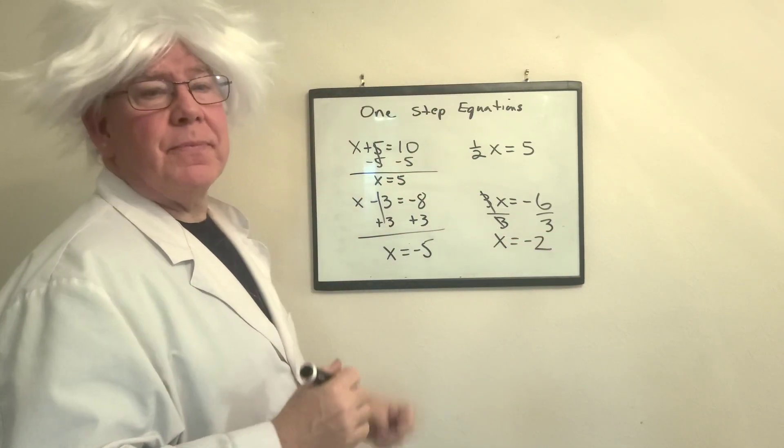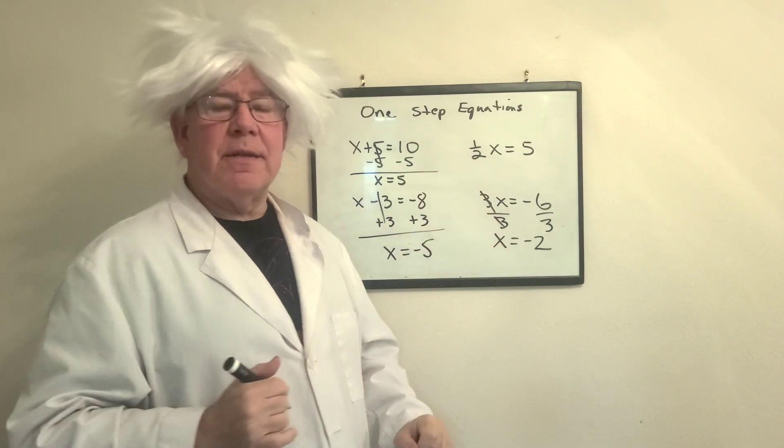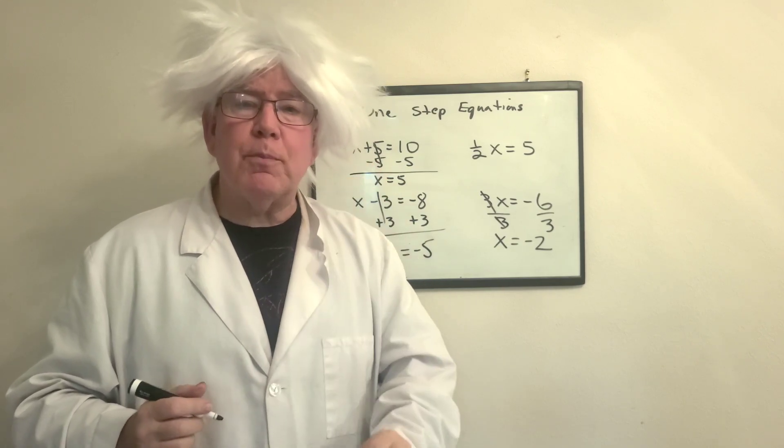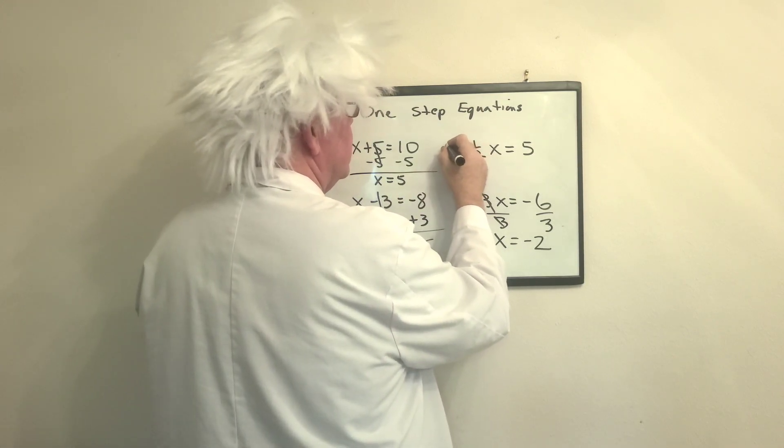Now, we come to here. This is the worst one because day one in any class, this is what I tell kids. If you have a fraction in front of the variable, you're going to multiply by its reciprocal. The reciprocal of 1 over 2 is 2 over 1.